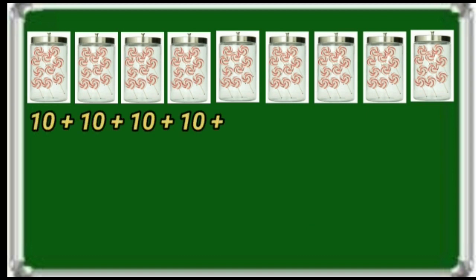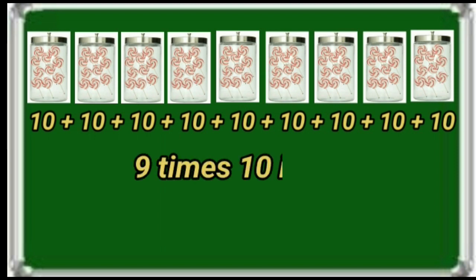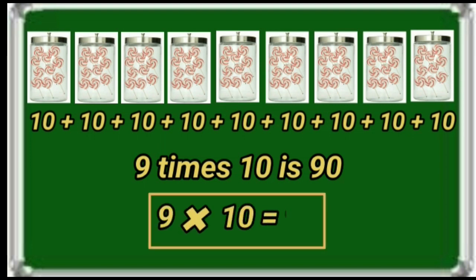At last he arranged 10 lollies in each jar. See here — 10 is repeating 9 times. 9 times 10 is 90. Total 90 lollies. That can be written as 9 10's = 90.